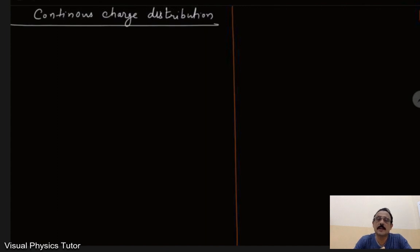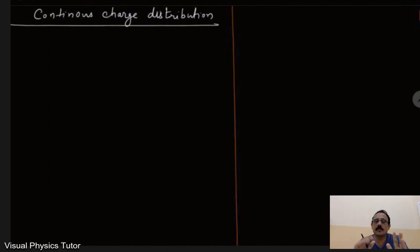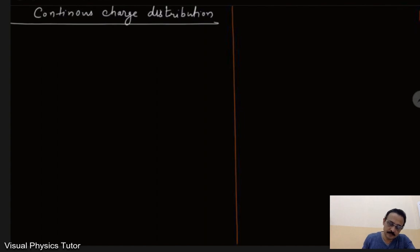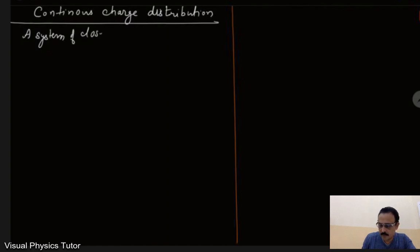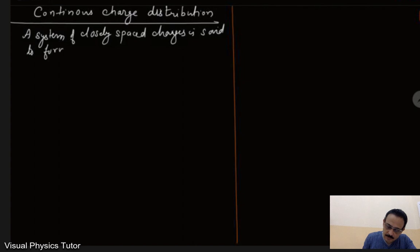Hello dear students, welcome to the channel Visual Physics Tutor, the best place to learn the concepts of physics in the easiest and finest way. Today our topic will be continuous charge distribution. A system of charges closely spaced or closely kept together can be called a continuous charge distribution.